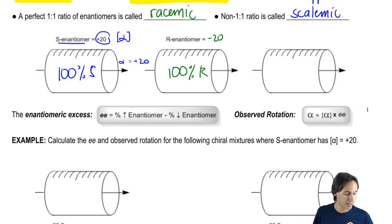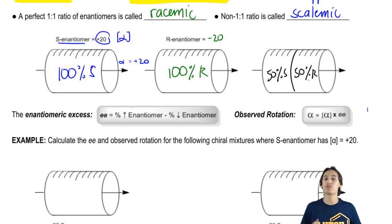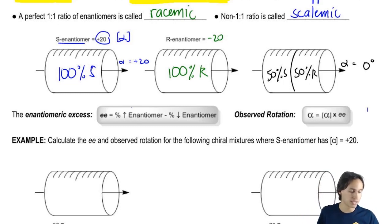Now what I want to do is let's say that I had 50% of S and then 50% of R. What would be my observed rotation in that case? Well, just intuitively, I have 50% rotating at 20 degrees to the right, I have 50% rotating at 20 degrees to the left. What would be the observed rotation? The observed rotation, or just the alpha symbol, not the alpha with the brackets, would be zero